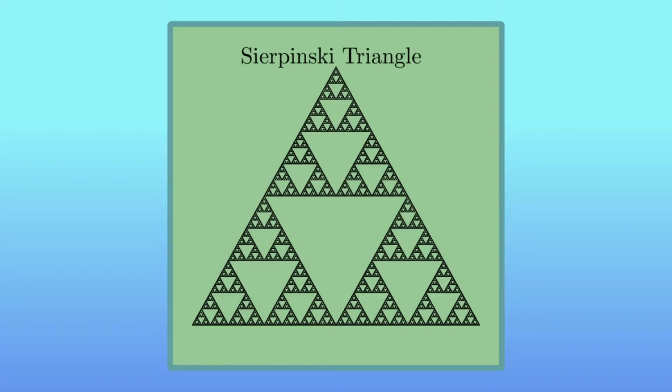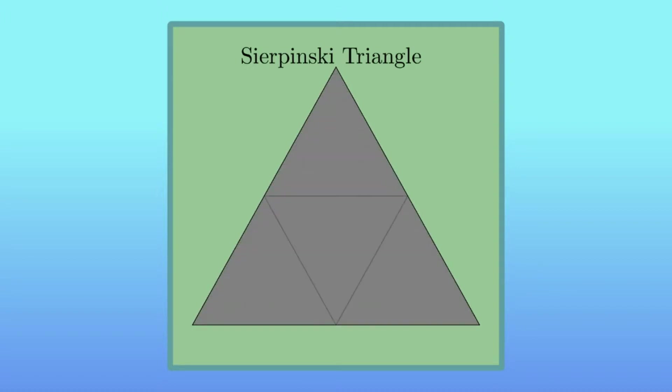If you ever want to construct such a shape, there are several ways to do it. Though probably the most well-known is the top-to-bottom approach. Start with the full triangle, divide it to four smaller triangles, and then remove the middle one.